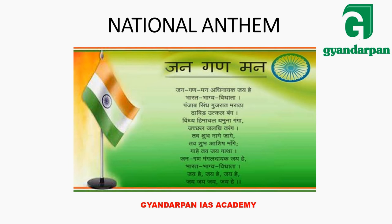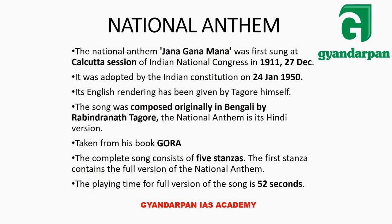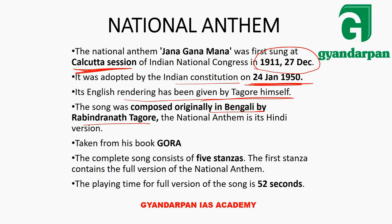Next is the National Anthem — Jana Gana Mana. It was first sung at the Calcutta session of the Indian National Congress in 1911. Its adoption date is 24th January 1950. It was originally written in Bengali by Rabindranath Tagore, and the English translation was also made by Tagore himself. It was taken from his book, and the duration of the song is 52 seconds.